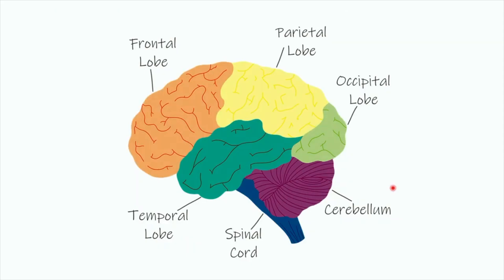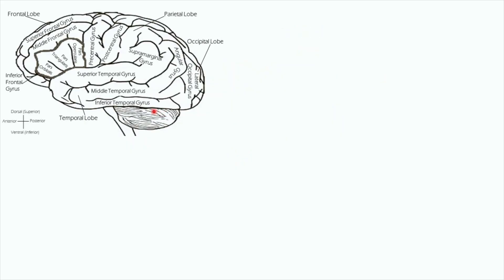Before getting into those particular language centers, let's look at an overview of the brain itself, because we need to know the different lobes in order to better understand where those language centers are located. The brain has four lobes: the frontal lobe, the temporal lobe, the parietal lobe, and the occipital lobe. The language centers are going to reside in the frontal lobe and the temporal lobe.